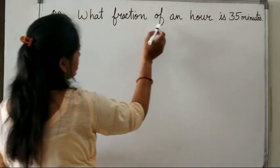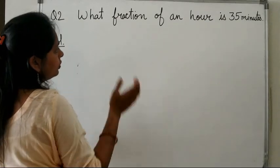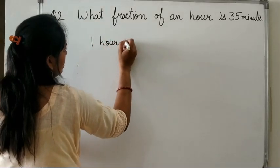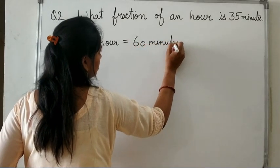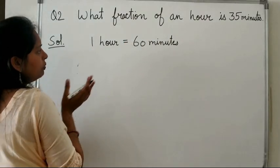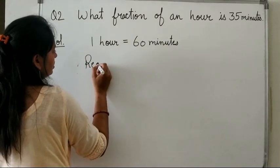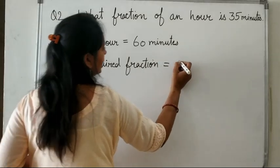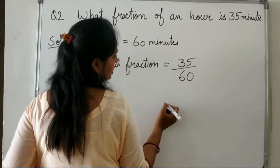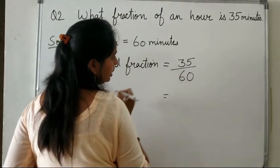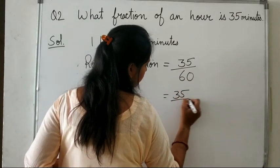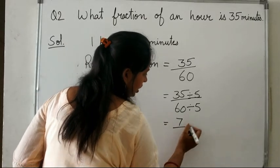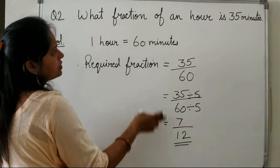Next question: what fraction of an hour is 35 minutes? We know 1 hour equals 60 minutes. So the required fraction is 35 upon 60. Since both can be divided by 5, in the lowest term this becomes 7 upon 12. So 7 upon 12 is the answer.